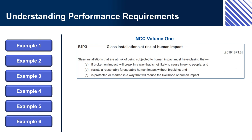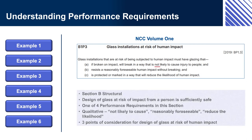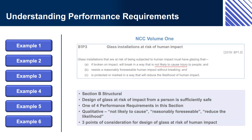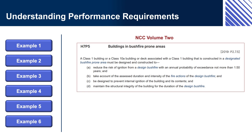Example 2 — NCC Volume 1, B1P3: Glass Installations at Risk of Human Impact. Section B Structural Design requires that glass at risk of impact from a person provides an adequate level of safety — one of four performance requirements in the section. This is qualitative: 'not likely to cause', 'reasonably foreseeable', 'reduce the likelihood'. Each factor must be considered individually when developing a compliance solution. For example, a sliding glass door is likely to require some form of marking to identify it and prevent someone walking through it.